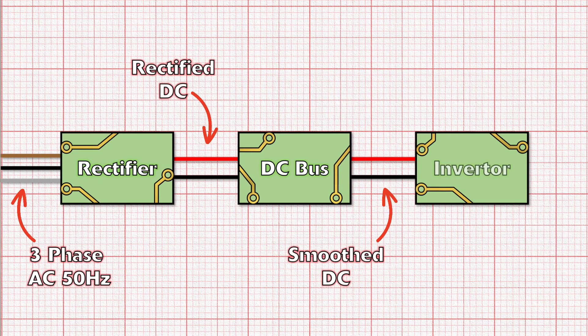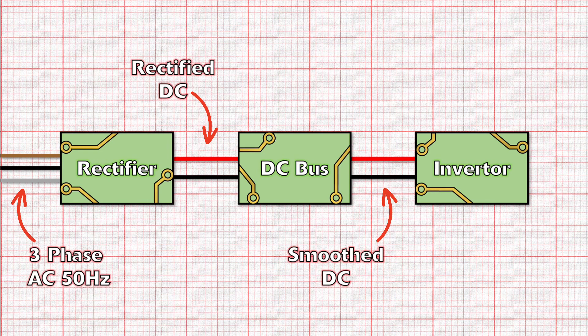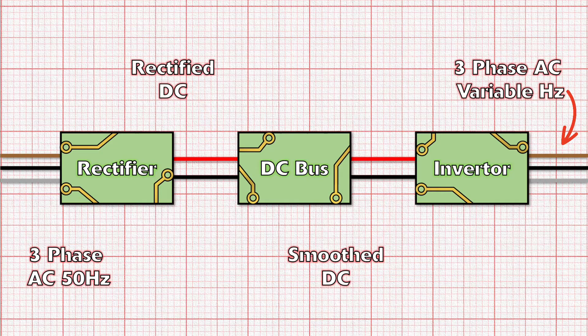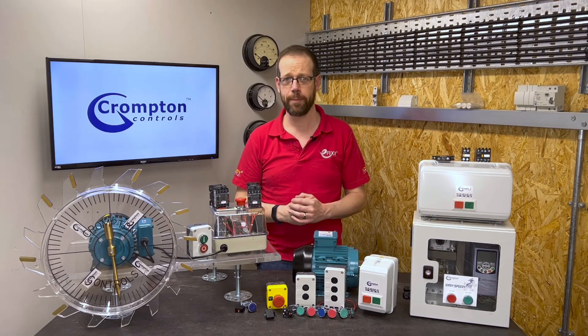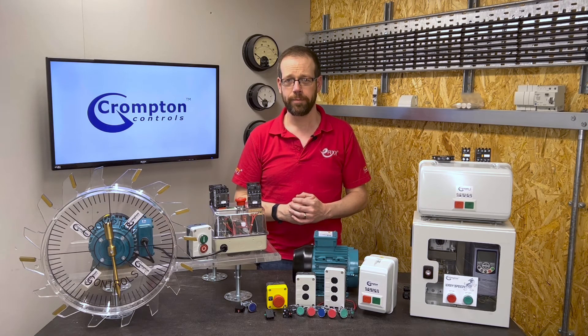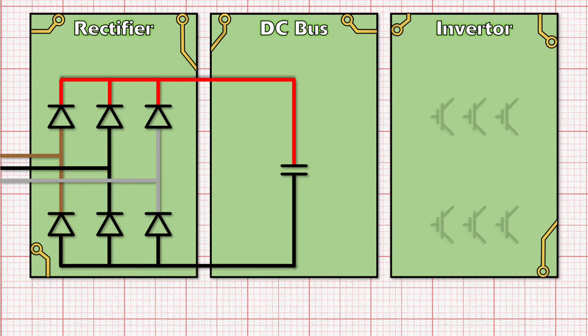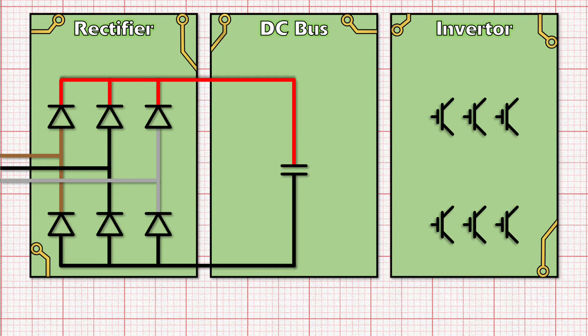Now we've got a nice smooth DC supply. We move on to the really clever part of the VFD. This part is called the inverter, and it takes the DC supply and turns it into—wait for it—a three-phase supply. It seems like a lot of effort to get back to where we started, right? Well, it's not quite that simple.